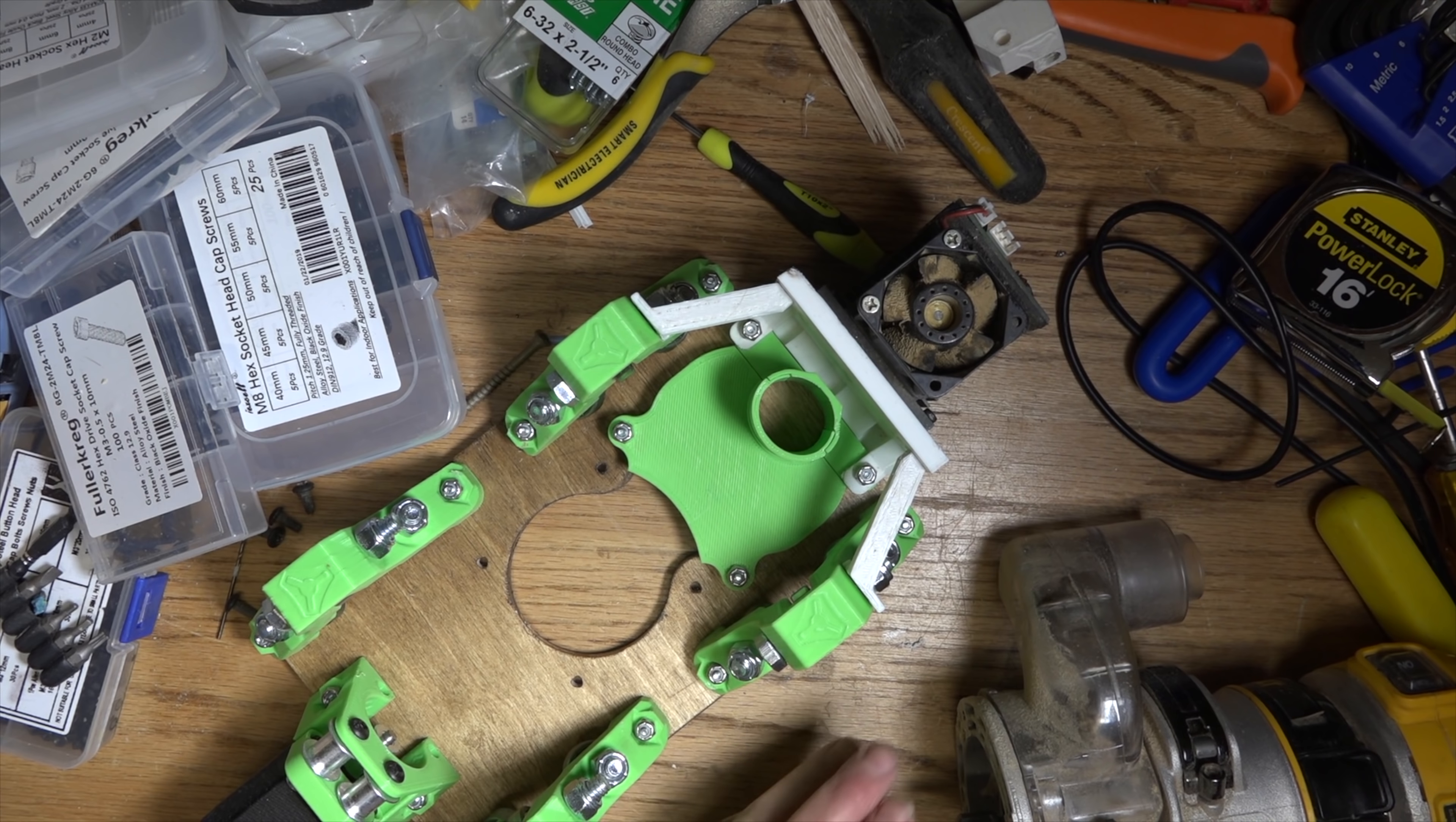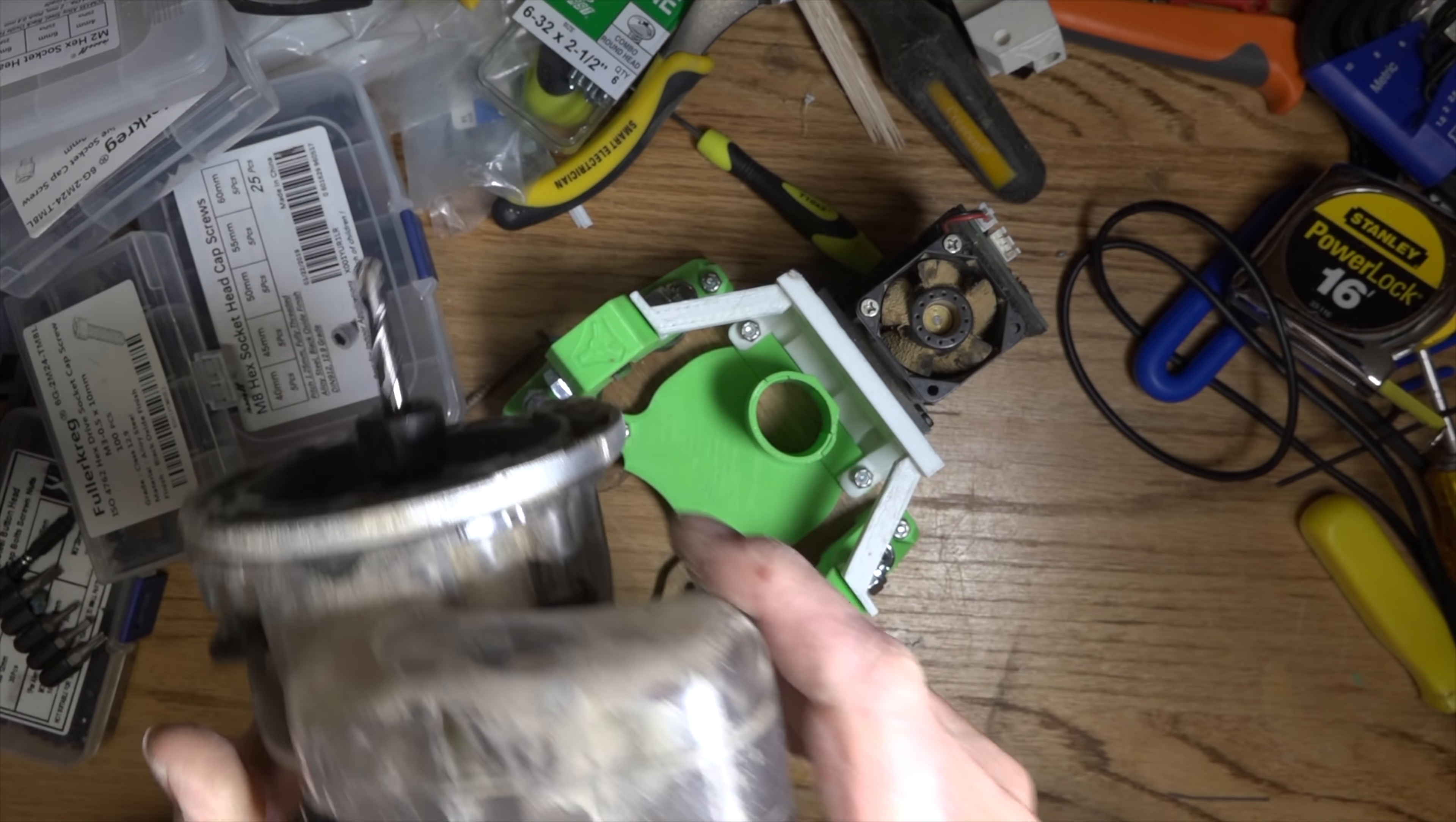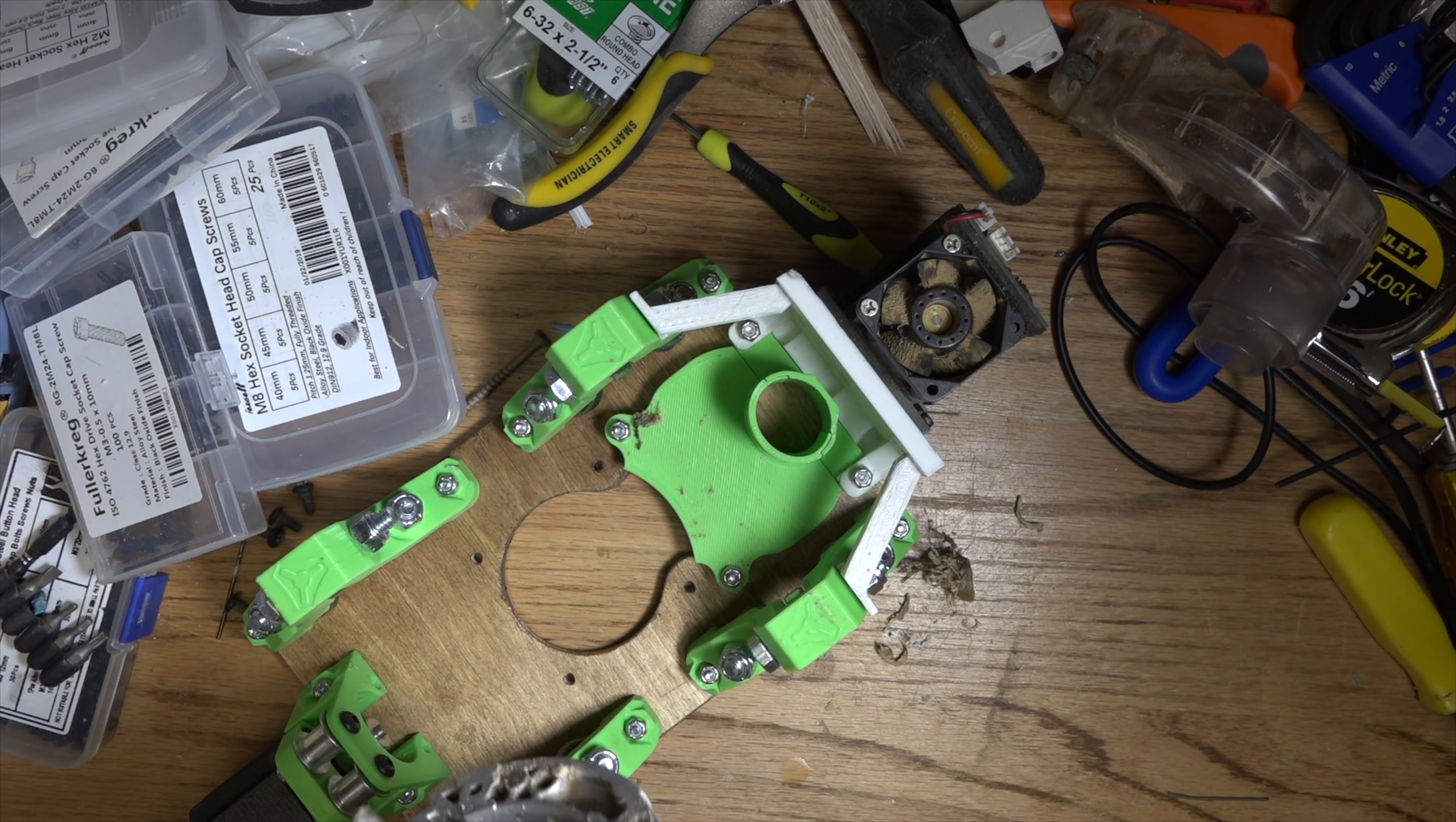Let's go ahead and mount the DeWalt 611 to the 611 plate here. I pulled it off the old plate that it was on on the Lowrider 1. Originally I had installed this dust collection port that they sell for the machine or for the router, and it just really doesn't do nothing because I usually run with the router all the way down anyway to get the most depth out of the system.